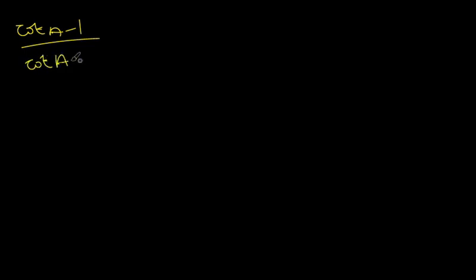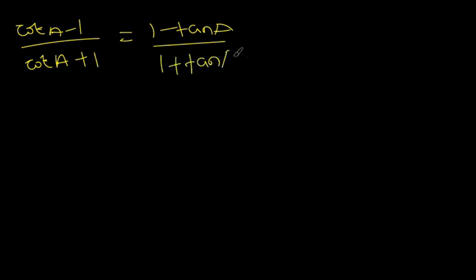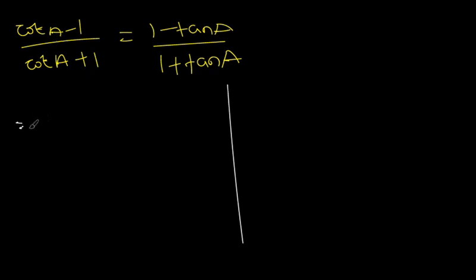Let's prove one more case and then end the tutorial. The last one: prove that cot A minus one divided by cot A plus one equals one minus tan A over one plus tan A. The first thing we want to do is write cot A in its simplest form. We know cot A is one over tan A, so cot A minus one becomes one over tan A minus one, and cot A plus one becomes one over tan A plus one.